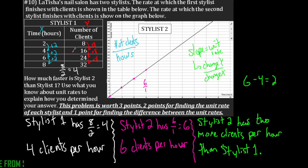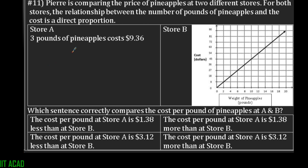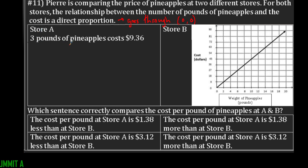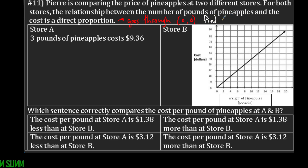In number 11 it says Pierre is comparing the price of pineapples at two different stores. For both stores the relationship between the number of pounds of pineapples and the cost is a direct proportion, meaning it goes through the origin. Store A goes through the point with $9.36, and for store B it gives you a graph. It says which sentence correctly compares the cost per pound of pineapples at A and B, so we're going to have to find the cost per pound for each store — that unit rate again.